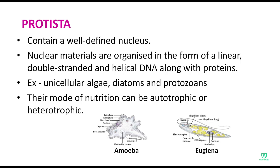Next is kingdom Protista. Protista contains a well-defined nucleus, meaning the nucleus was present and the genetic material was organized in the form of a linear, double-stranded and helical DNA along with proteins. The nuclear material was present inside the nucleus. Examples include unicellular algae, diatoms, and protozoans. Protista's mode of nutrition was also autotrophic or heterotrophic.